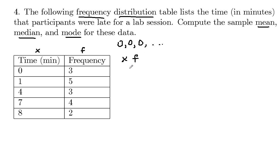So here's x times the frequency. Zero times three is equal to zero. One times five is equal to five because five ones are going to contribute five to the total. Three times four is 12, four times seven is 28, and two times eight here is 16.